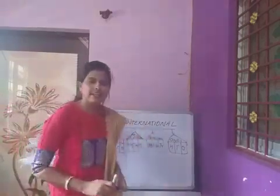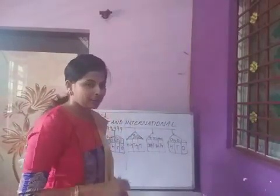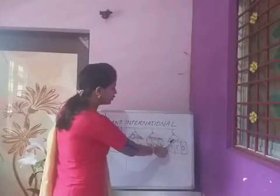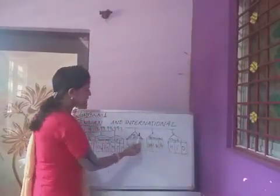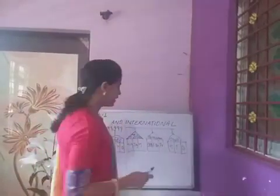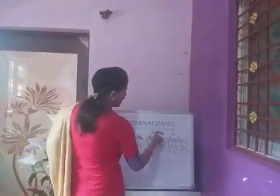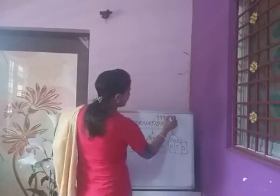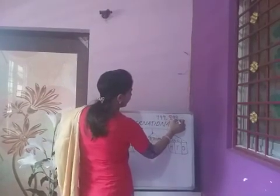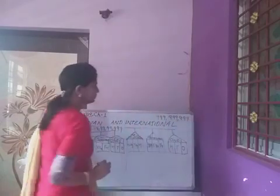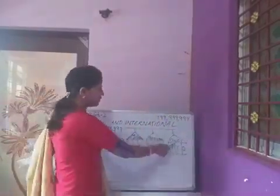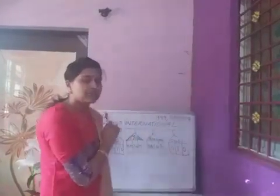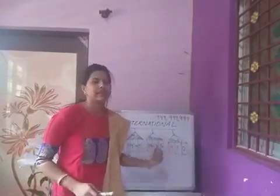Now the new system — that is the international system — and you all have understood it very well. But still I will revise it once. There are only 3 periods: ones, thousands, and million. Means only 3 houses for the 9-digit number. Here also the digits are 999 million, 999 thousand, and 999. For this there are 3 periods. And in this system it is very easy to recall because all the houses have 3 places.